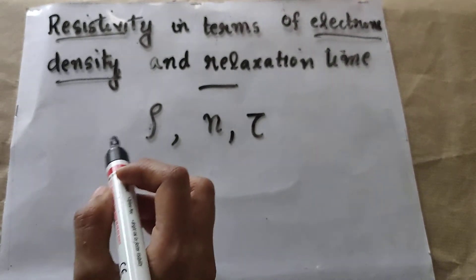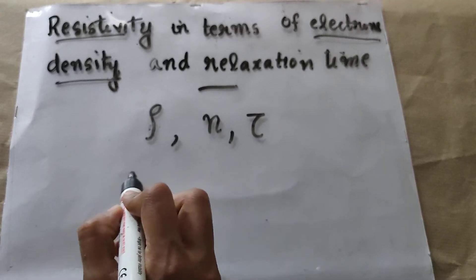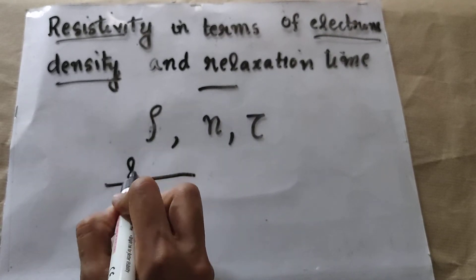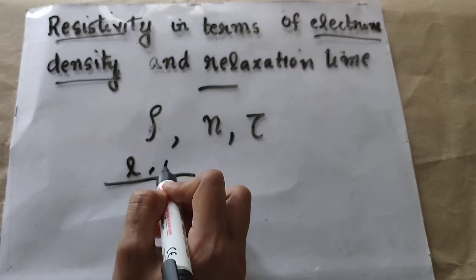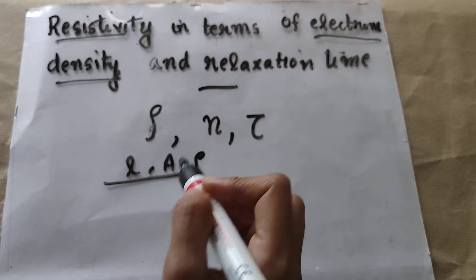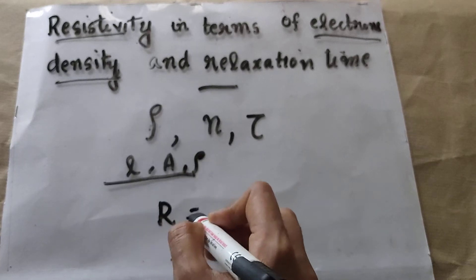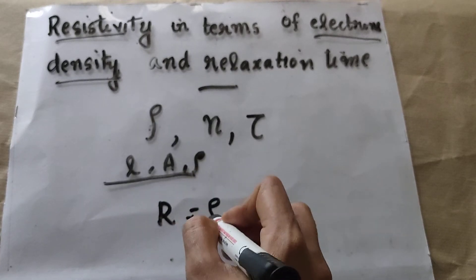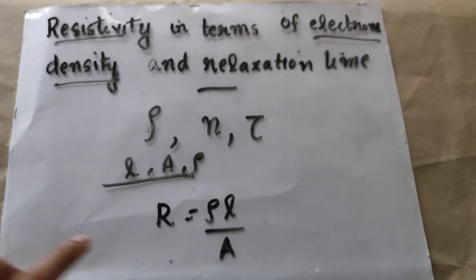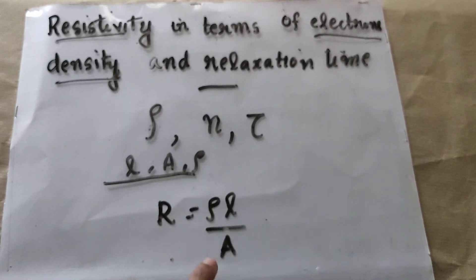We have studied this equation: if you have a conductor of length L and area of cross section A and resistivity rho, its resistance R can be written as R = rho × L / A.